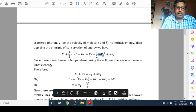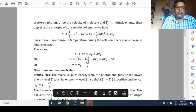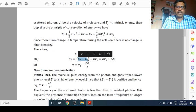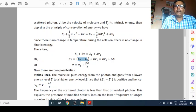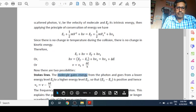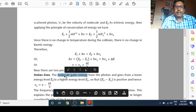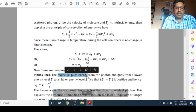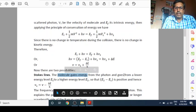On solving, you will get nu is equal to nu1 plus del E by H. What is del E here? Del E is the difference of internal energies, EF minus EI. Here, there are two possibilities. Depending upon whether photon loses energy to molecule or molecule loses energy to photon. Suppose the molecule gains energy from the photon and goes from a lower energy level to higher energy level.